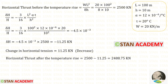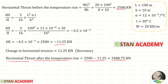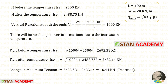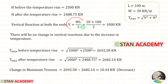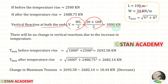Now let us find the horizontal thrust after the temperature rise. Using this formula, we can find the vertical reactions at both ends of the cable. W is 20, L is 100. Finally, we will get 1000 kilo Newton.